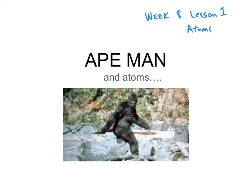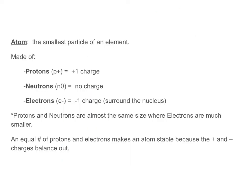We're going to talk about atoms — this is a review of what we went over in the lesson. Atoms are made up of protons. Protons have a positive one charge and a mass of one. This is measured in AMU, but we'll go over that later. We also learned about neutrons. Neutrons have no charge — neutrons are neutral — and they also have a mass of one.